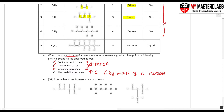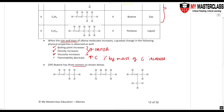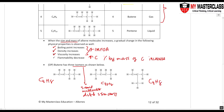Butene has three isomers. Isomers have the same molecular formula — the same number of carbon and hydrogen atoms — but different structures. For butene, all isomers have the molecular formula C4H8. In the first isomer, the double bond is on carbons one and two; in the second, the double bond is on carbons two and three; in the third, the double bond is on carbons one and two but carbon two has a methyl group. All three are isomers of butene.